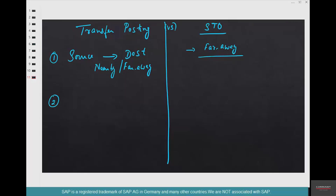The second difference is that transfer posting is used when you want to do a stock transfer from plant to plant or from storage location to storage location. A stock transport order is typically used from plant to plant — it is not used when you want to transfer from a storage location to another storage location within the same plant.